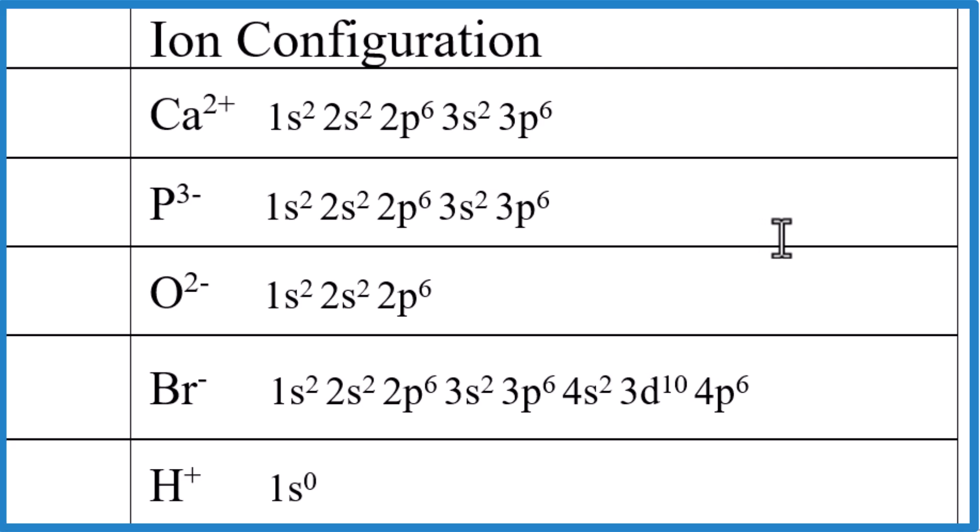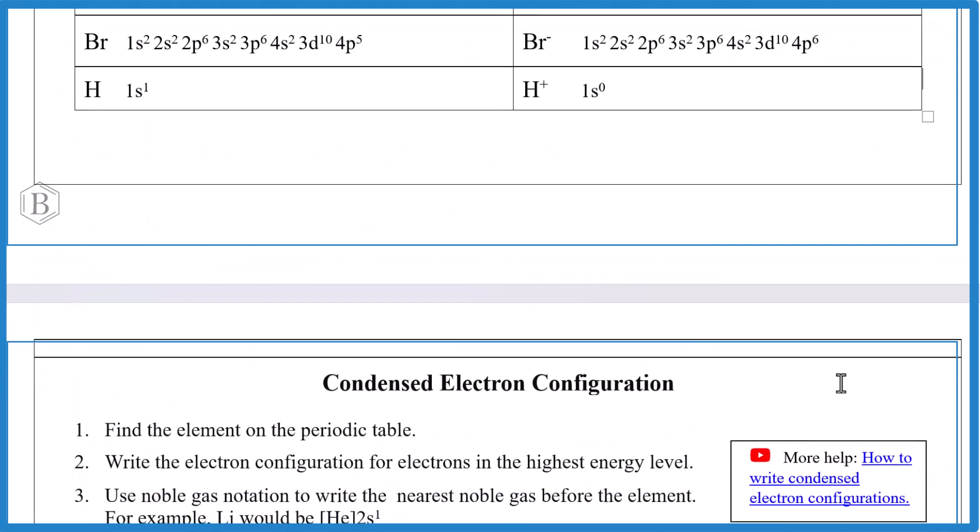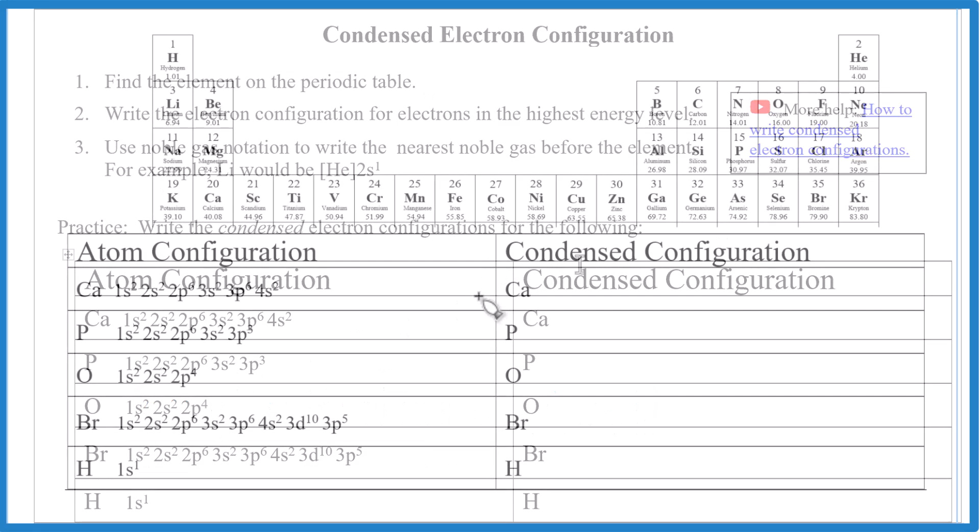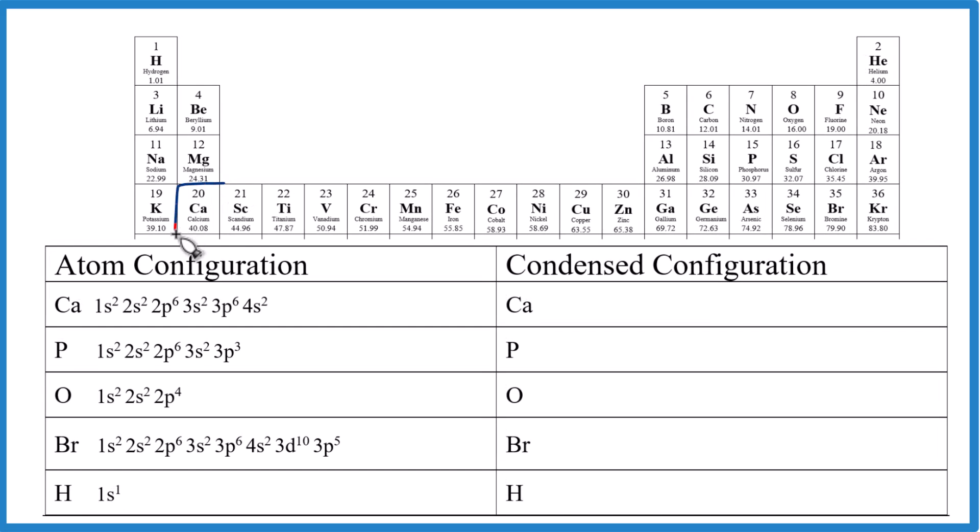Alright, so now you can do configurations for ions, which is pretty simple. Sometimes your teachers want you to write condensed electron configurations. And that can be helpful when you get something kind of big like bromine down here. Let's make this bigger. So we find calcium. Calcium is right here. And then we go back to the first noble gas. That's argon. So we're going to write brackets and then AR. That's argon. And all of this right here, this is the electron configuration for argon. Count them up. 18 right here. 18 for argon. So we write argon. And then we just put the end on here. 4, S, 2. That's the condensed notation.